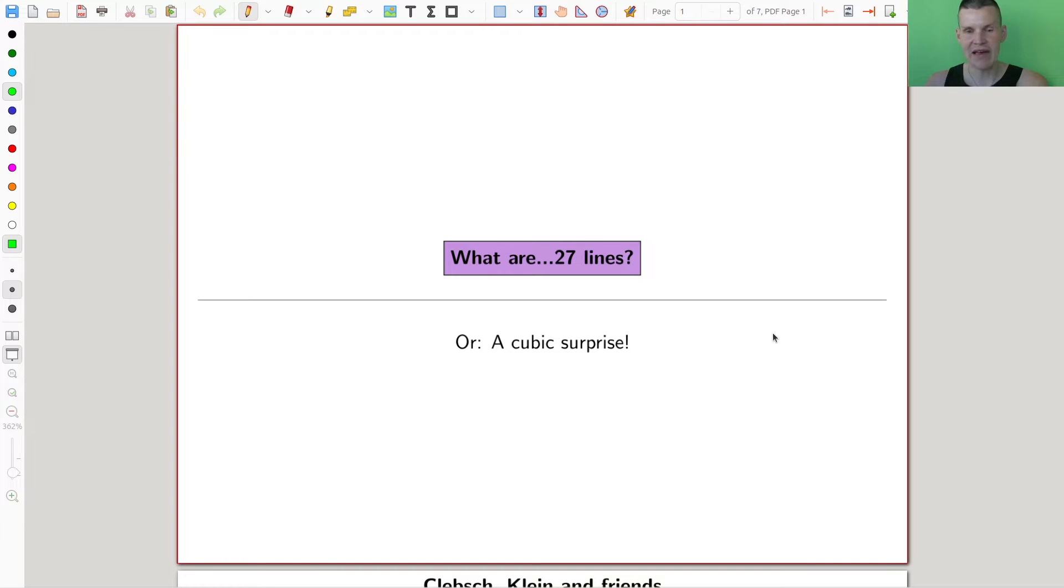And one of these classical surprises, I call it the cubic surprise, is the story about the 27 lines, which is really popular, really famous, and really surprising.